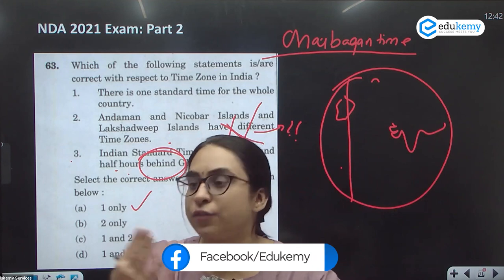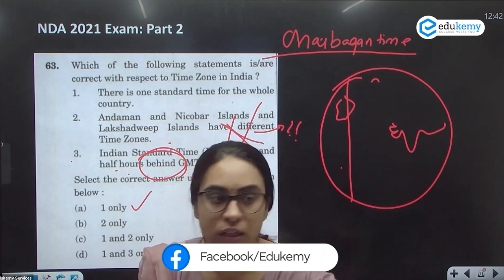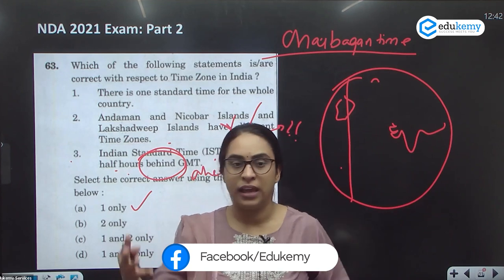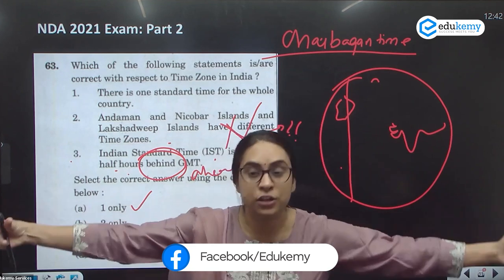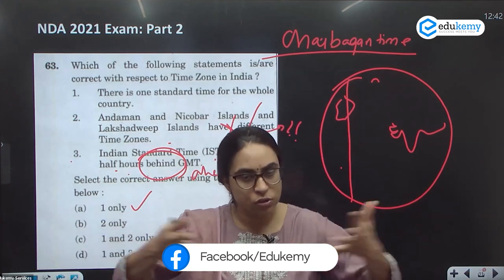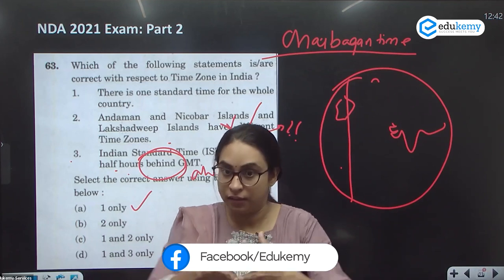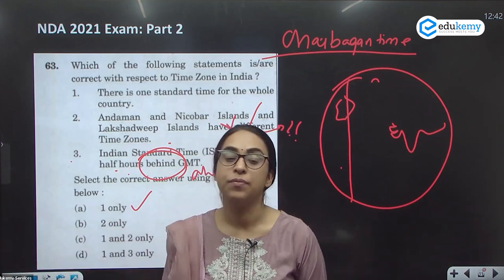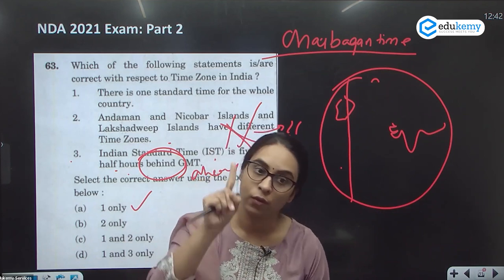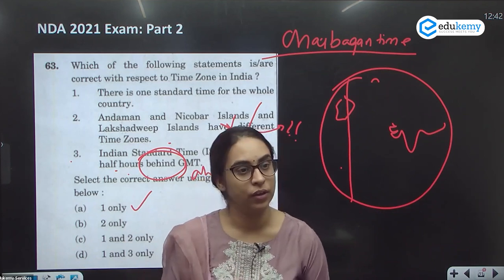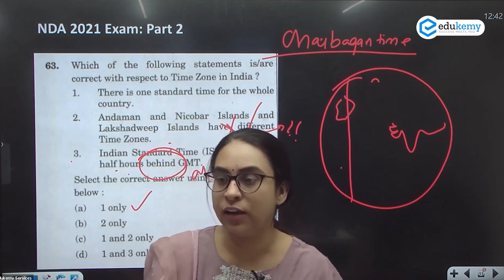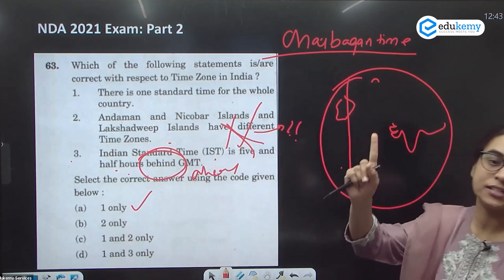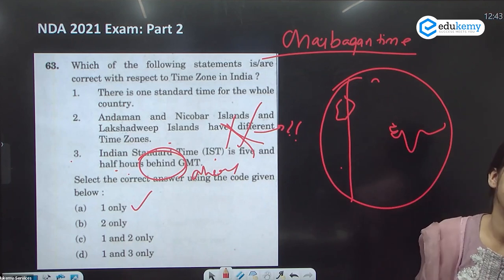Why do countries like France, England, and Russia have different time zones? They have colonial possessions, various islands, and a great longitudinal extent. However, China, despite its great east-to-west extent, still has only one time zone — because that is a symbol of national integrity.